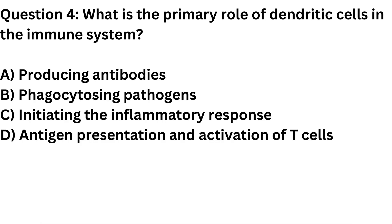Question 4. What is the primary role of dendritic cells in the immune system? A. Producing antibodies. B. Phagocytosing pathogens. C. Initiating the inflammatory response. D. Antigen presentation and activation of T-cells.